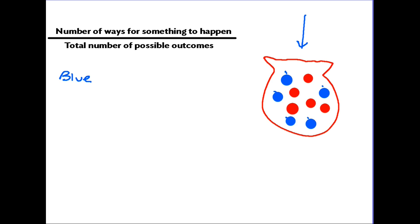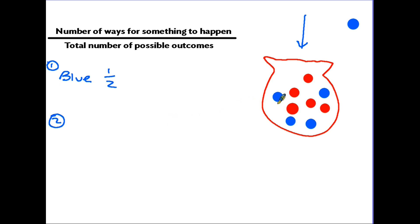Now let's change things. As it stands, blue is a half. So let's put our hand in and take out a blue counter. We are now looking at putting our hand in for a second time. We want the probability of getting a blue counter again. Things have changed — now there are only 4 blue counters, so there are only 4 ways we could get the blue one. How many counters are in the bag altogether? One's gone, so it's no longer 10, it is now 9. So there are now 4 blues out of 9 counters, and the probability is 4 out of 9. You can't simplify 4 out of 9, so it stays there.